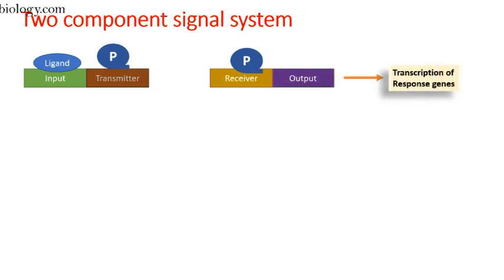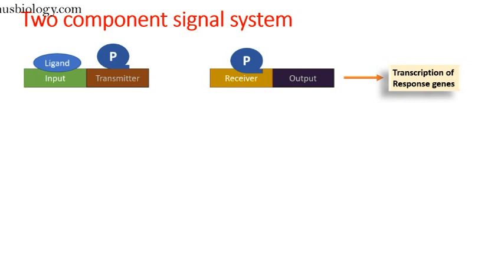Once the receiver domain is phosphorylated, the output genes start transcribing the response genes. They will make the mRNA, which will move outside of the nucleus and be translated into the distant proteins. This is the action of a two-component signal system where the two separate components are not directly linked but become activated by phosphorylation events.